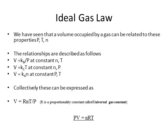Let's consider one physical property — volume. Volume can be related to the other physical properties: Boyle's Law gives V = constant / P (at fixed amount and temperature); Charles' Law gives V = constant × T (at fixed amount and pressure); and Avogadro's Law gives V = constant × n (at fixed pressure and temperature). Let's now combine all of these together.